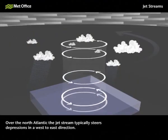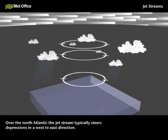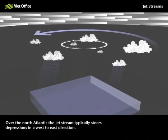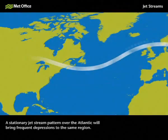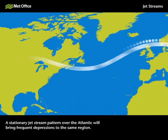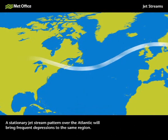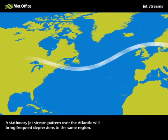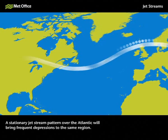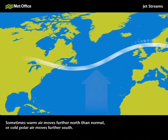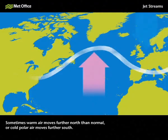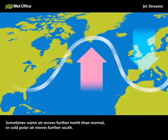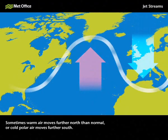Over the North Atlantic the jet stream typically steers depressions in a west to east direction. A stationary jet stream pattern over the Atlantic will bring frequent depressions to the same region. Sometimes warm air moves further north than normal or cold polar air moves further south.